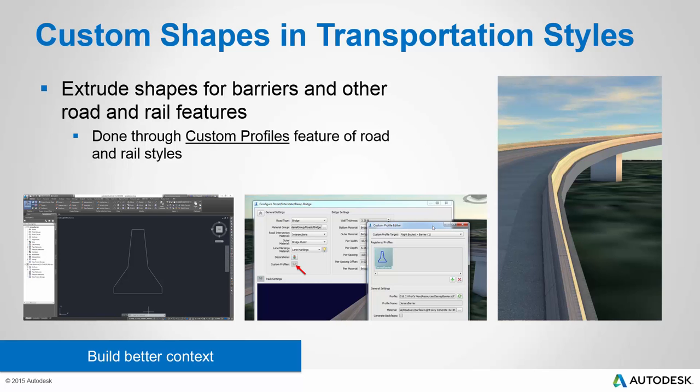So not only does this allow you to build better context, it also allows you to build better design because these transportation styles — the road and rail styles — apply to existing features as well as design features.